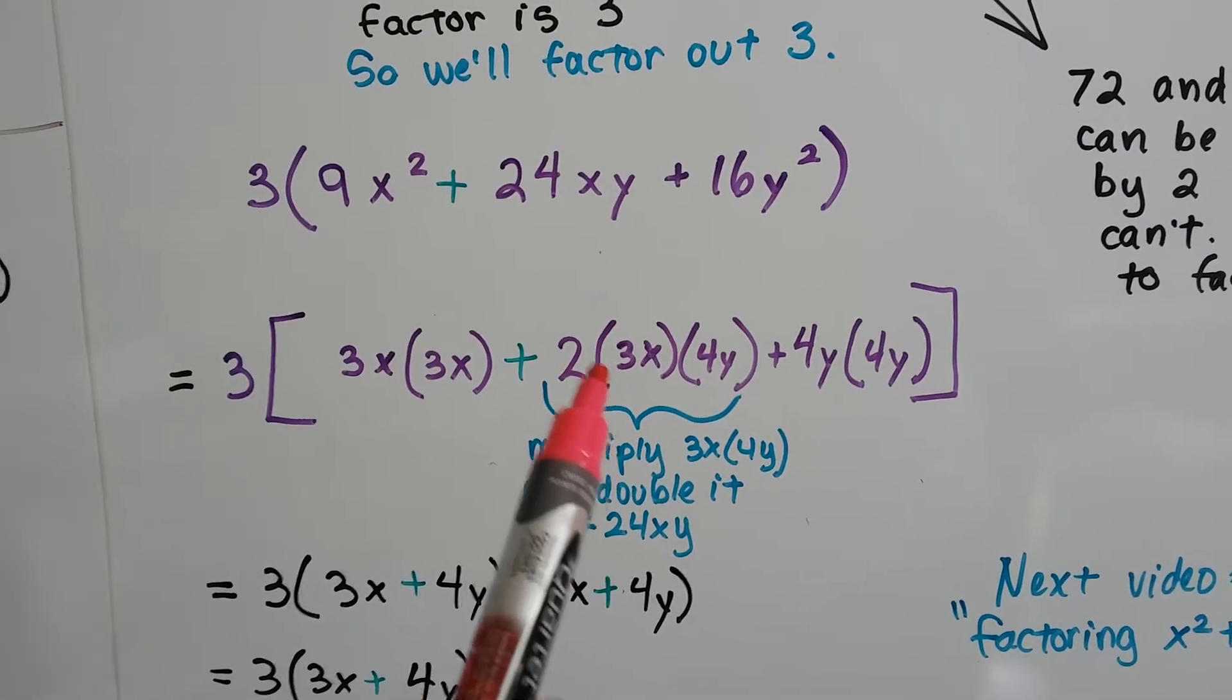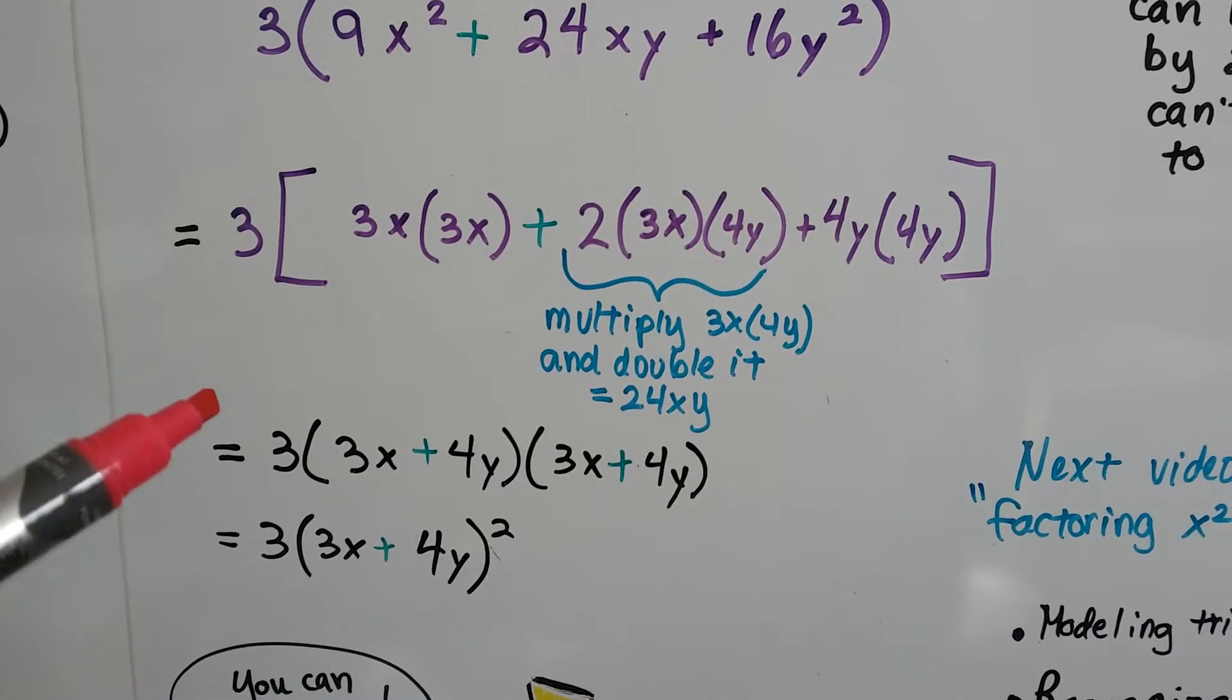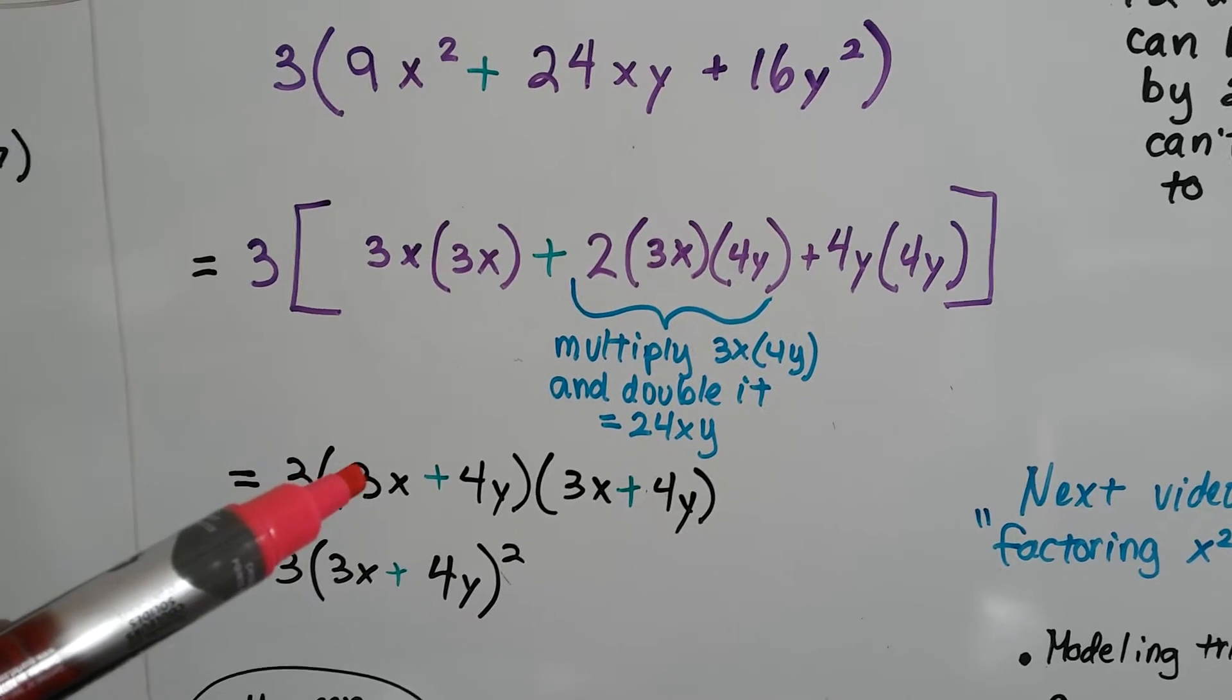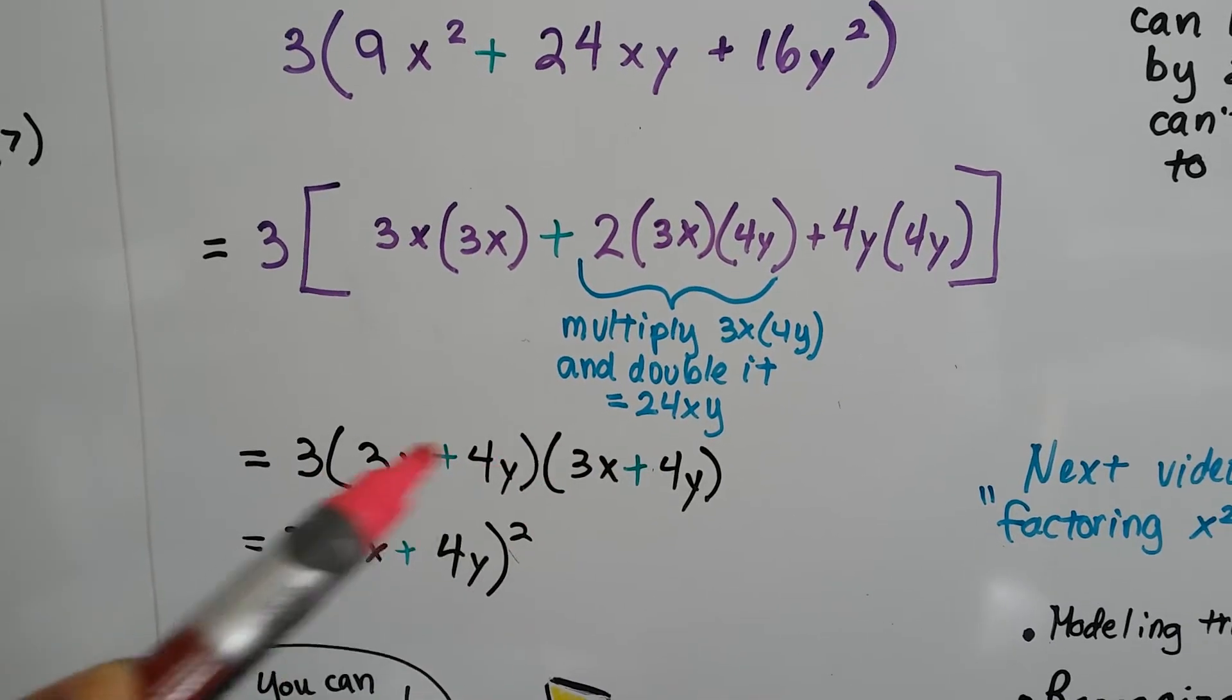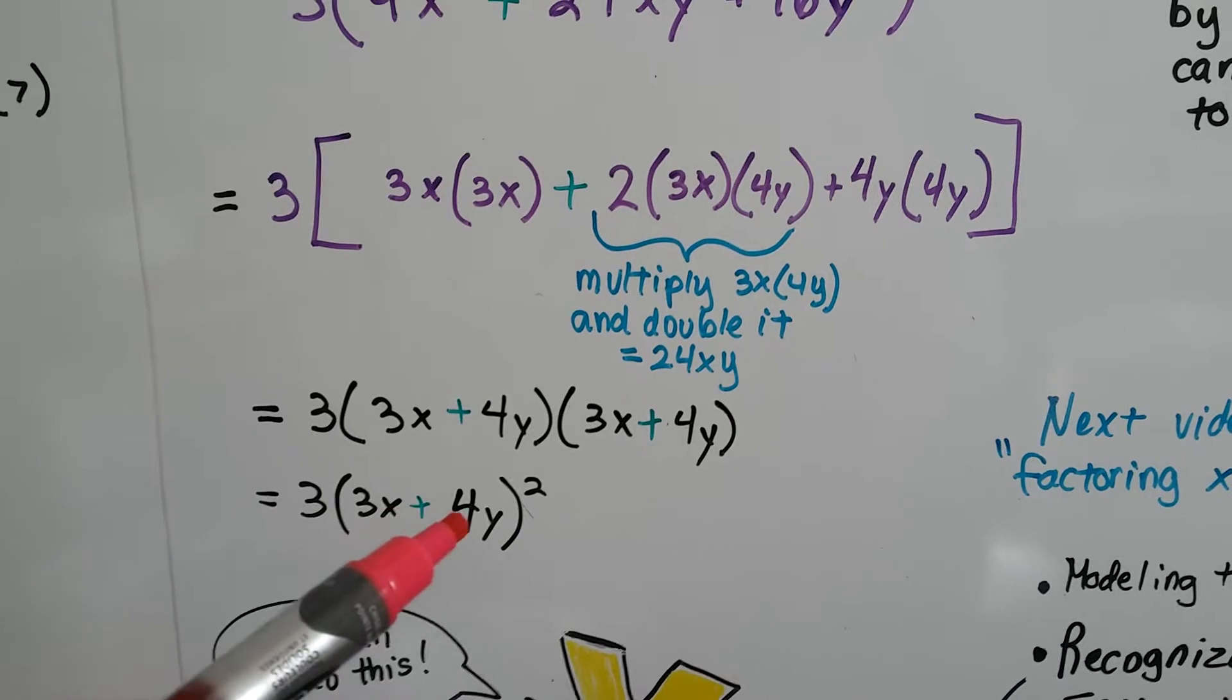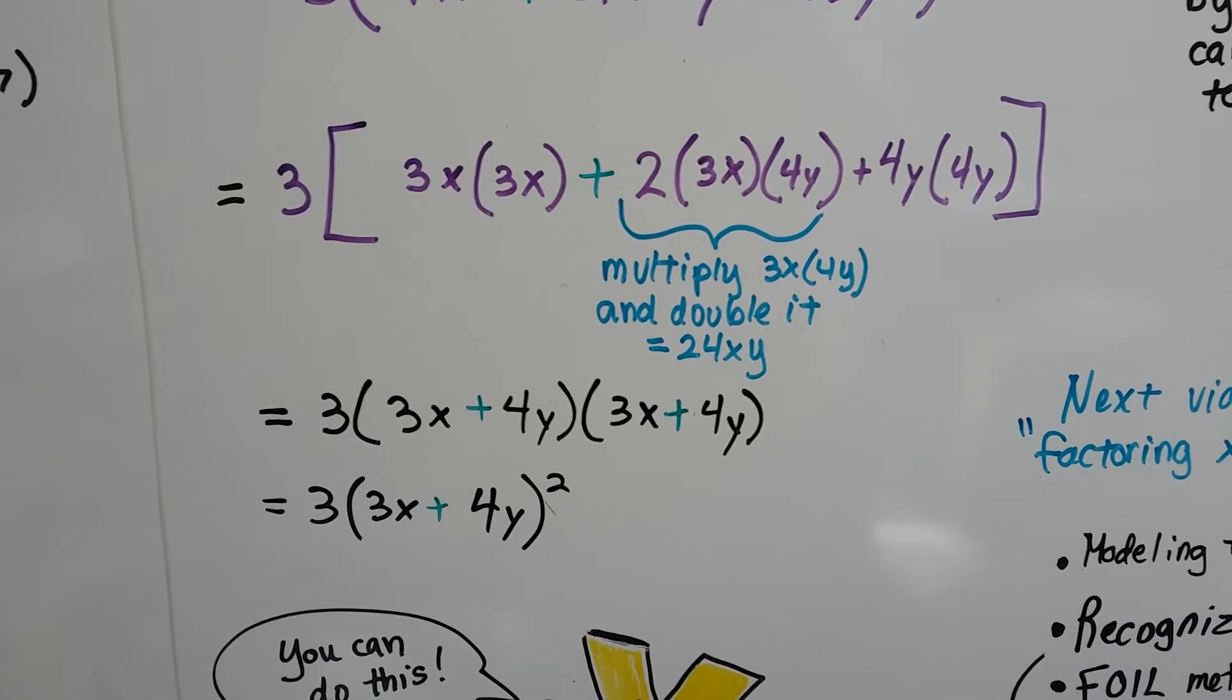So we need to break this into 2 times 3x and 4y. So now we've got our 3 on the outside of the parentheses, and it's multiplied to 3x + 4y times 3x + 4y, and we can write this as a binomial square, because they're identical. So we've got 3 on the outside of the parentheses, and then (3x + 4y)², and then the 2 on the outside of the parentheses there. See that? The exponent.